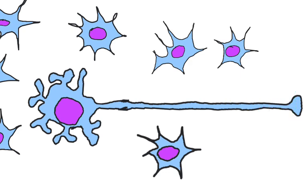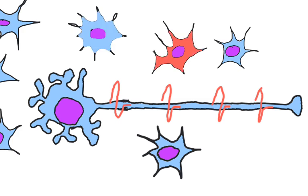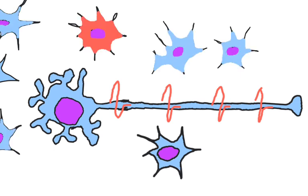All action potentials are the same, so to code information, neurons regulate the frequency of action potentials. Glia can also fire electrical signals, although their signals are much slower than an action potential. Nevertheless, because they are so numerous, what we see on an fMRI actually represents glial electrical activity, not so much neuronal activity.